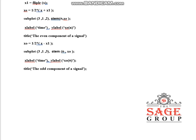The even component is given by the formula half into x plus x1. To plot this even component I use subplot(3,1,2), stem(n, xc) — the stem command is used for plotting discrete time signals — with x-label time, y-label xc(n), and title 'even component of a signal'. The odd component is half into x minus x1, where x1 is the folded version. For plotting: subplot(3,1,3), stem(n, x0), x-label time, y-label x0(n), title 'odd component of a signal'.